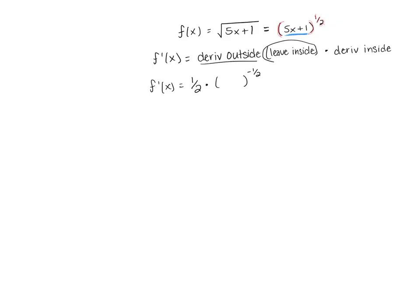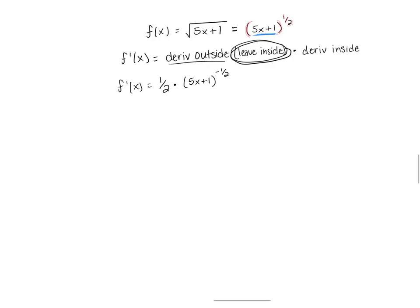And it says over here in parentheses that we want to leave the inside alone. So I'm just going to take the inside and just copy it down. So 5x plus 1 is what was inside before. So that takes care of this first part.